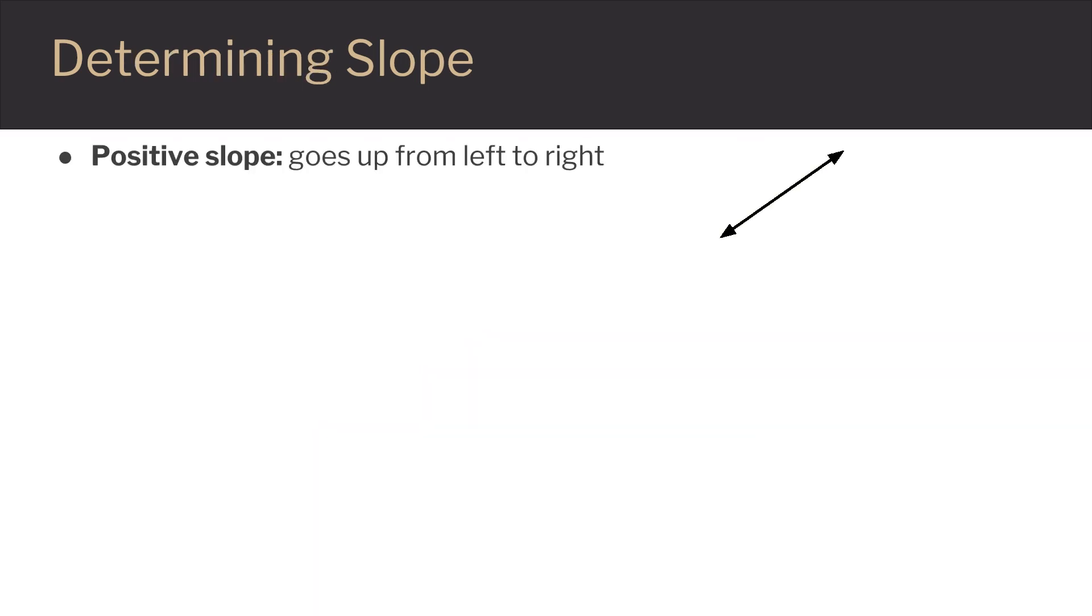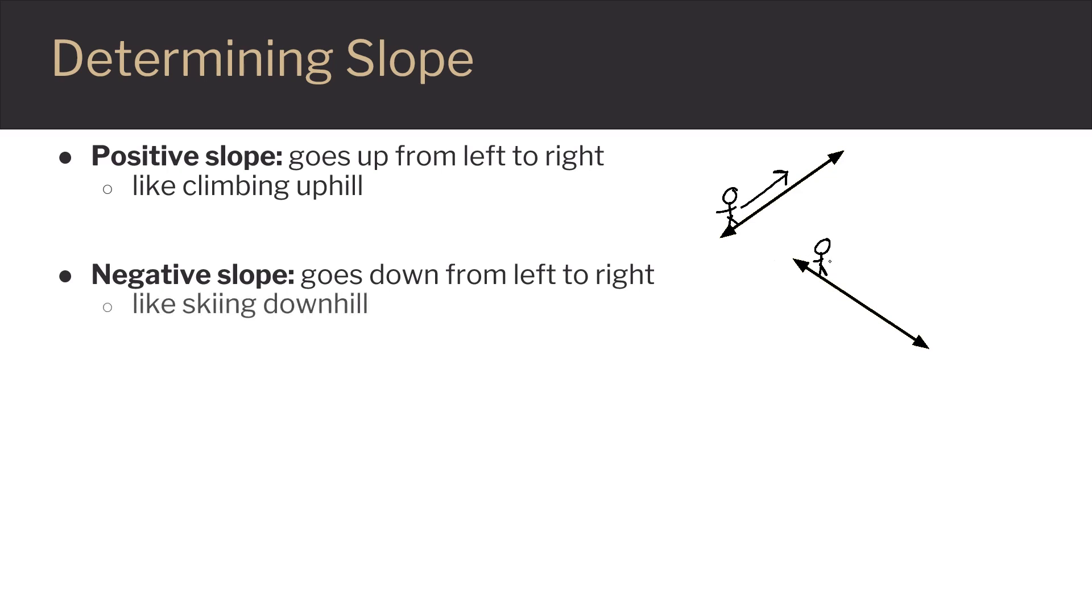Positive slope goes up from left to right, so if you're on the left-hand side it's like you're climbing uphill. Negative slope goes down from left to right, so if you're on the left-hand side it's like you're skiing downhill.